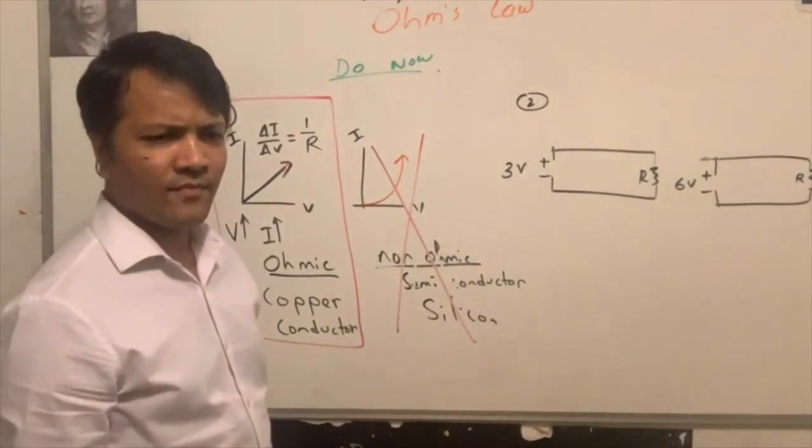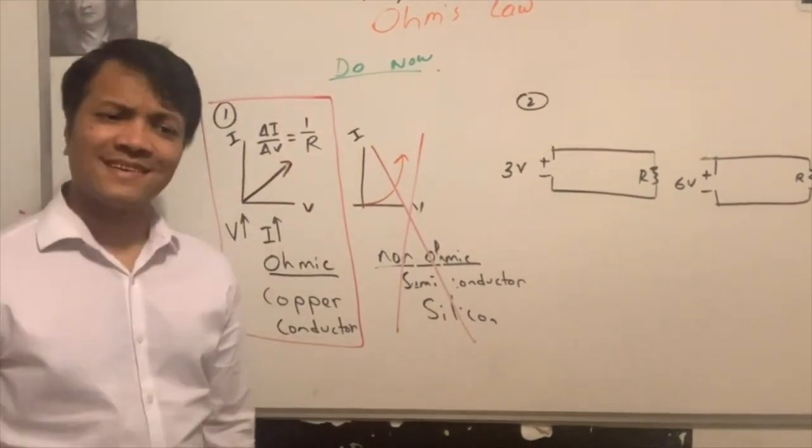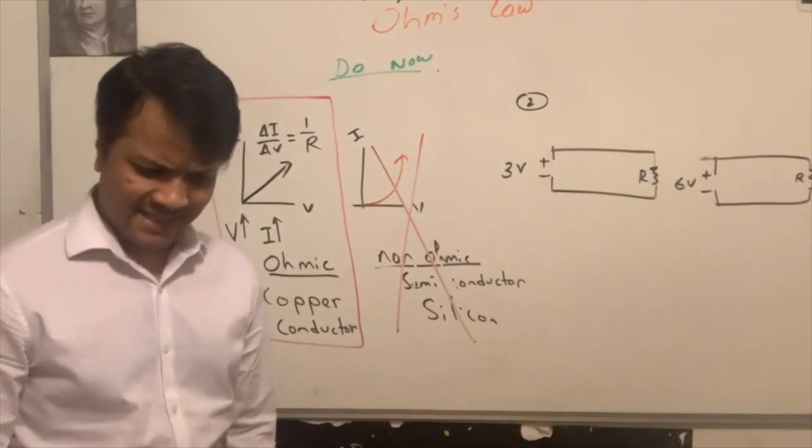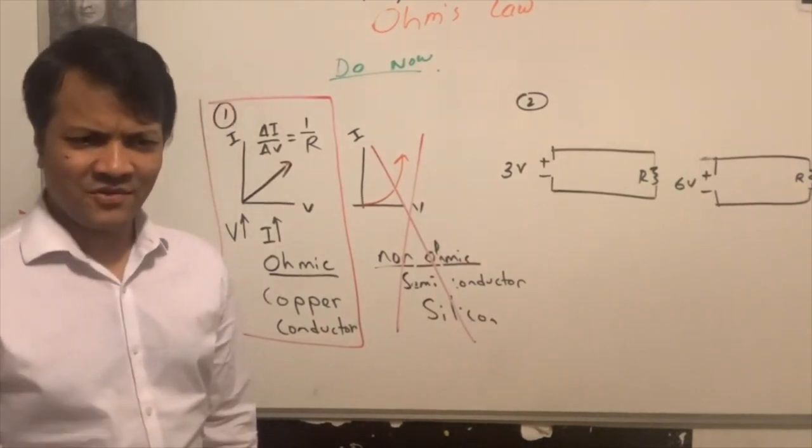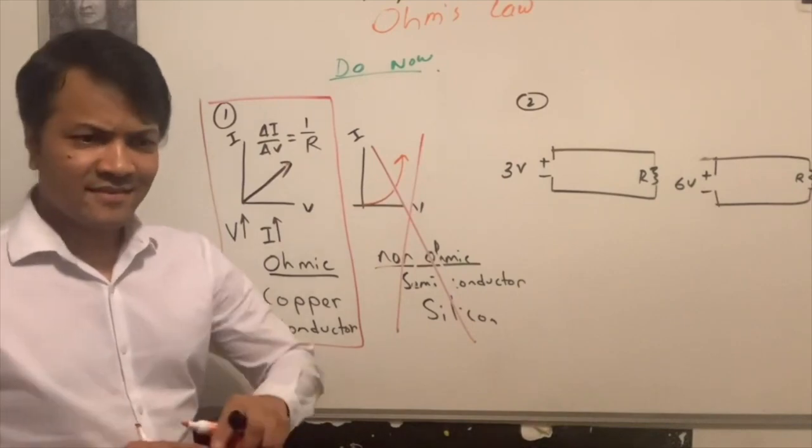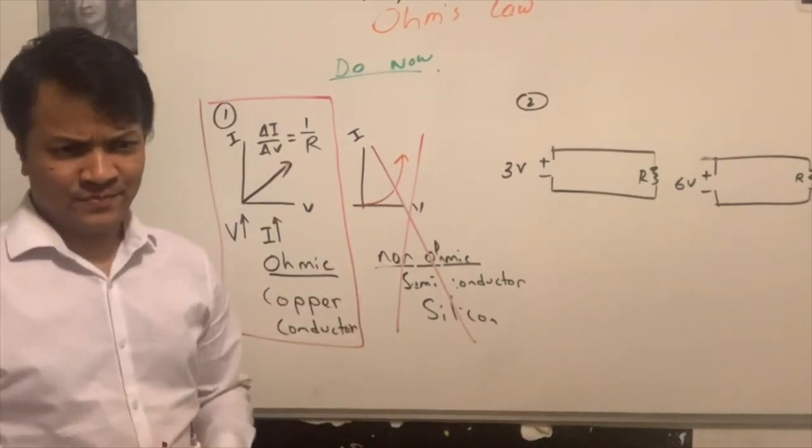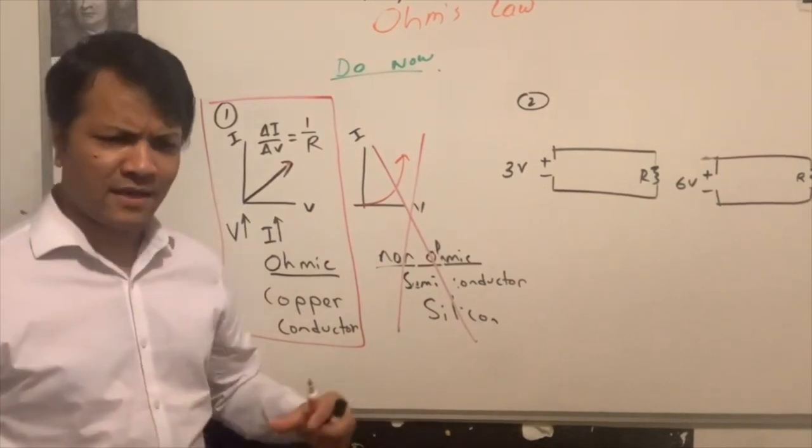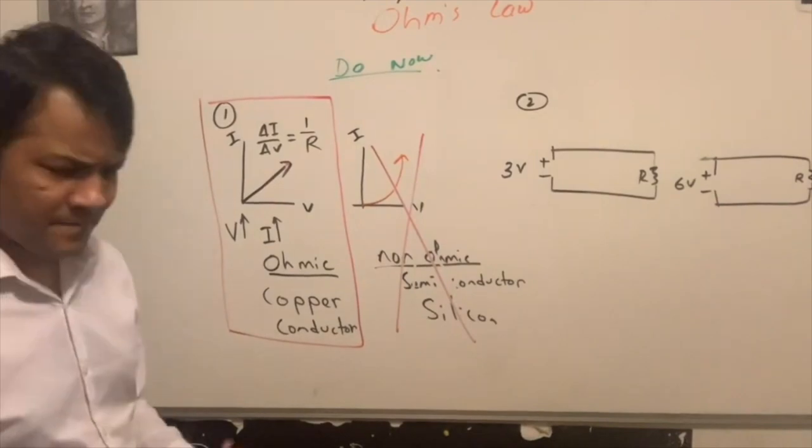In reality, we should call it Ohm's theory, right? No. We're going to call it Ohm's relation. It's less prestigious than theory. Theory is when it's almost like a law, then we call it theory. Okay. Let me call it theory. Now, let's get to number two.